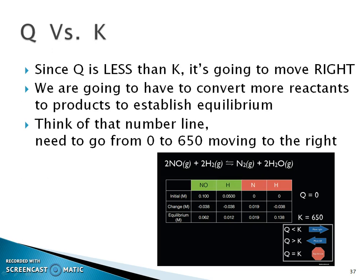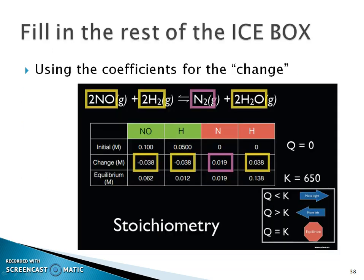When Q is less than K, using those initial concentrations versus the equilibrium constant, that reaction will have more products than reactants overall. To fill in the rest of the ICE box, stoichiometry tells us we subtract the change for reactants and add the change for products. We'll go through this in more detail in part two of this section.